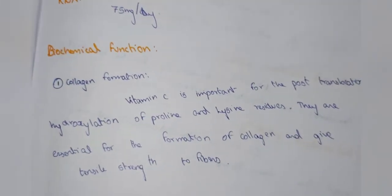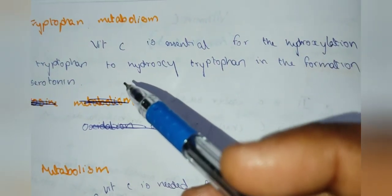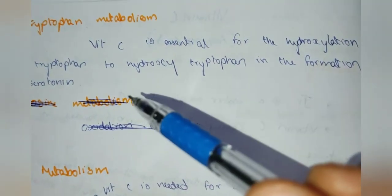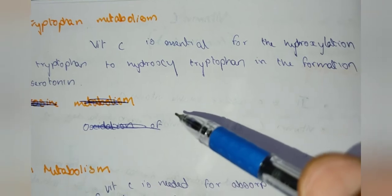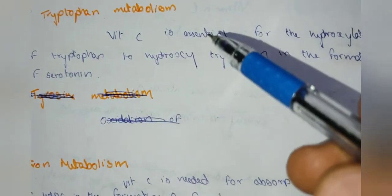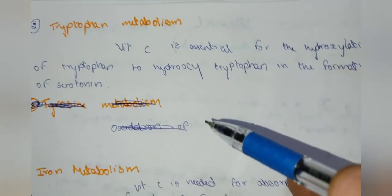Vitamin C is used in tryptophan metabolism. It is essential for the hydroxylation of tryptophan to hydroxy-tryptophan, which is involved in the formation of serotonin.